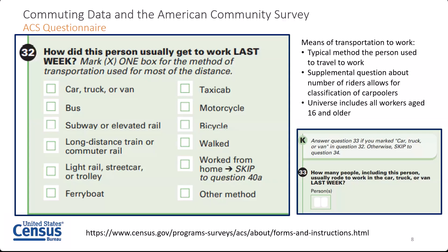First, we collect information about means of transportation to work. We ask the person to select from a list of common methods the way that they usually travel the most of the distance to work. We also ask a supplemental question about the number of riders if they ride by car, truck, or van, which allows us to classify workers who carpool to work. The universe for this question includes all workers age 16 and older, so we're able to account for how all workers get to work or whether they work from home. Most recently, with the COVID-19 pandemic, the sharp increase in working from home has generated a lot of interest. Next year, we'll be updating the taxicab line in this question to taxi and ride-hailing services, to ensure that some newer but still familiar modes of commuting are being captured consistently.